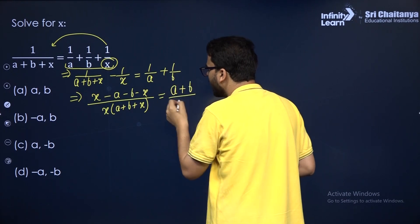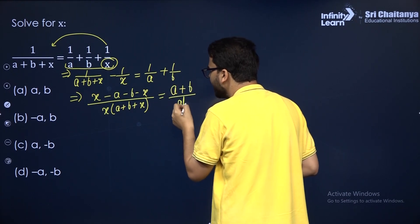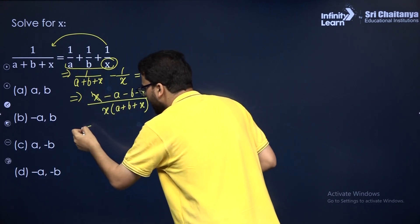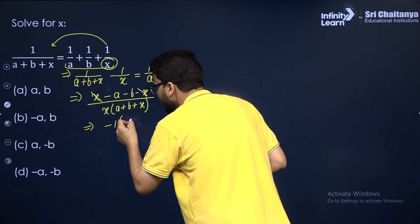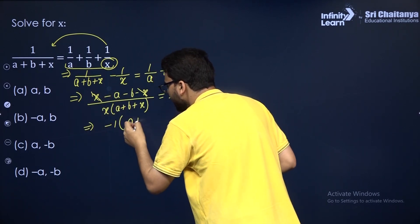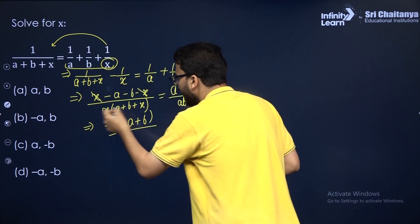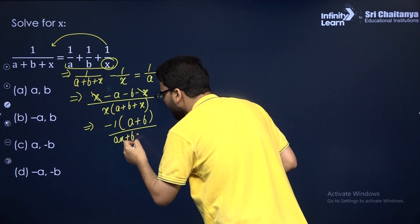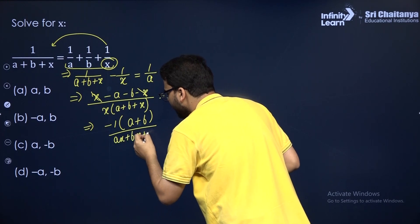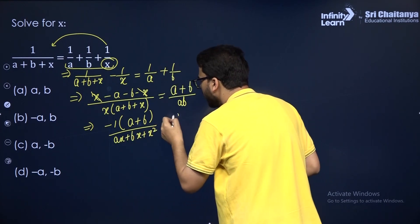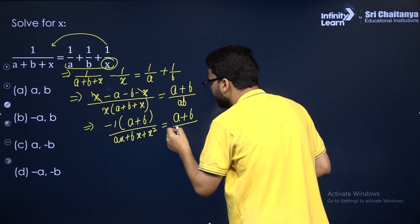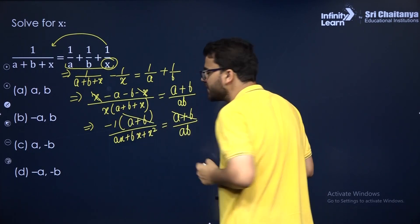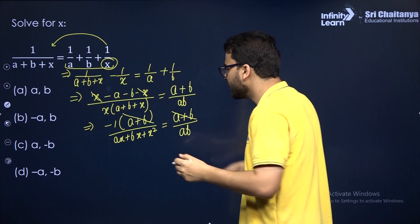So this equals (A + B)/(AB). You see X and X will get cancelled out. Now I can take minus 1 as common, so (A + B) will be left, and in the denominator I can write AX + BX + X², which equals (A + B)/AB. So can I cancel out (A + B) as well and then cross multiply?